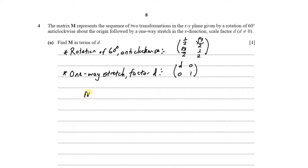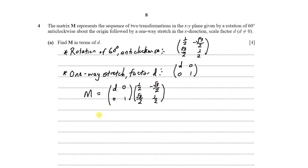We now have the two matrices. To find matrix M combining both transformations, we multiply the two matrices in reverse order. Since the first transformation is the rotation and the second is the one-way stretch, we pre-multiply by the one-way stretch matrix. So we have (d, 0; 0, 1) multiplied by (½, −√3/2; √3/2, ½).